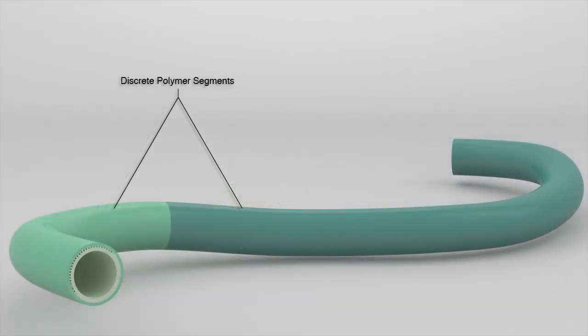In many conventional guide catheters, the outer layer consists of discrete polymer segments for variable flexibility along the length. These conventional shafts are often assembled manually from multiple components.